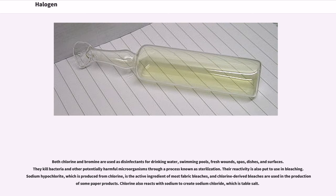Both chlorine and bromine are used as disinfectants for drinking water, swimming pools, fresh wounds, spas, dishes, and surfaces. They kill bacteria and other potentially harmful microorganisms through a process known as sterilization. Their reactivity is also put to use in bleaching. Sodium hypochlorite, which is produced from chlorine, is the active ingredient of most fabric bleaches, and chlorine-derived bleaches are used in the production of some paper products. Chlorine also reacts with sodium to create sodium chloride, which is table salt.